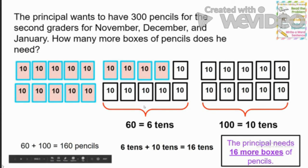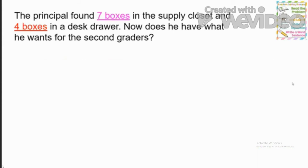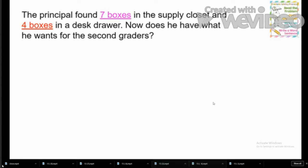We're not done yet — there's one more question that builds on this. The principal needs those 300 pencils for the second graders. Remember, we had 14 boxes and we know he needs 16 more. But the principal found seven boxes in the supply closet and four boxes in the desk drawer. Does he now have what he wants for the second graders?